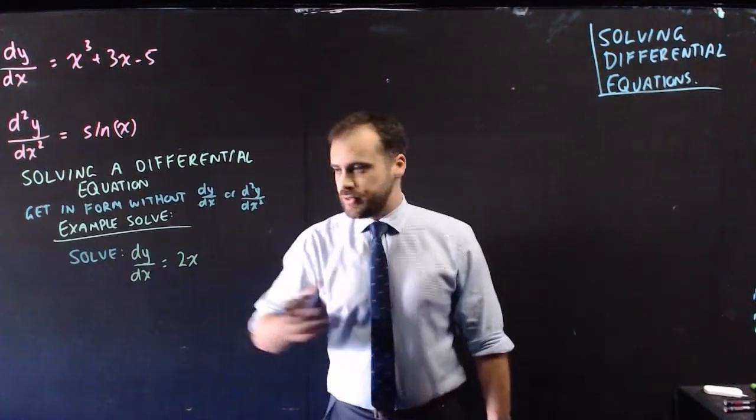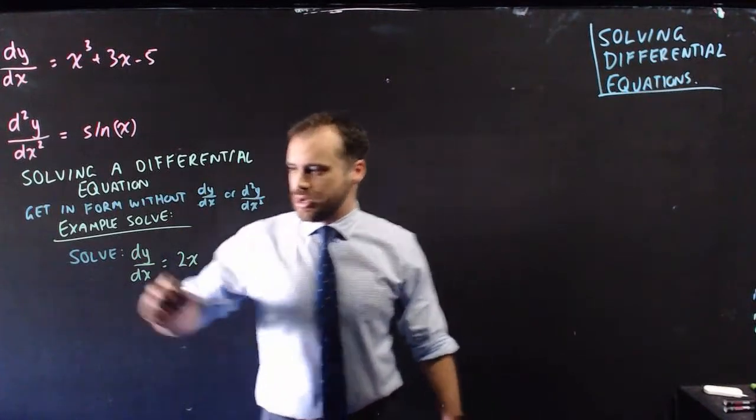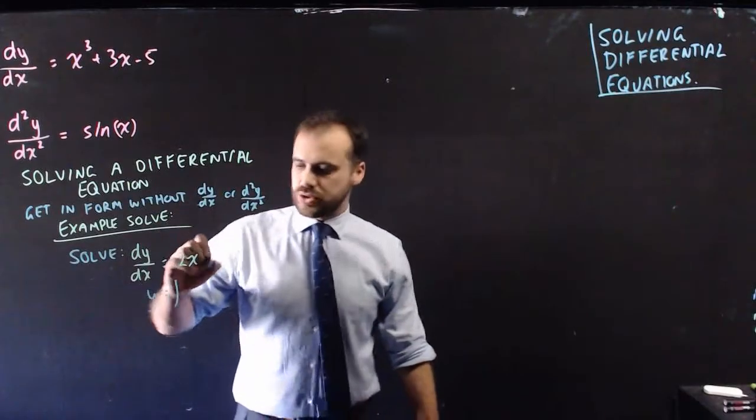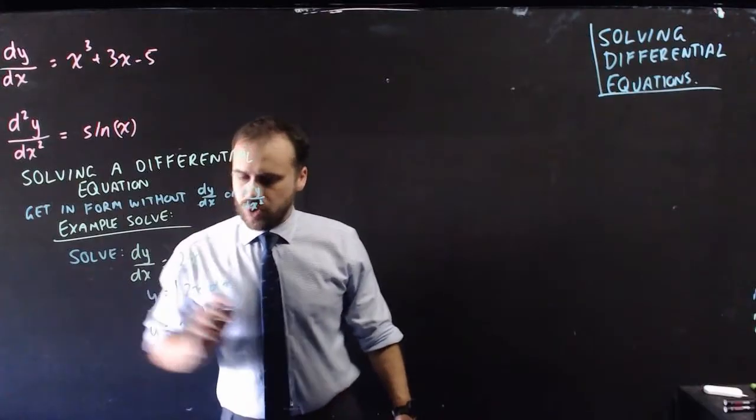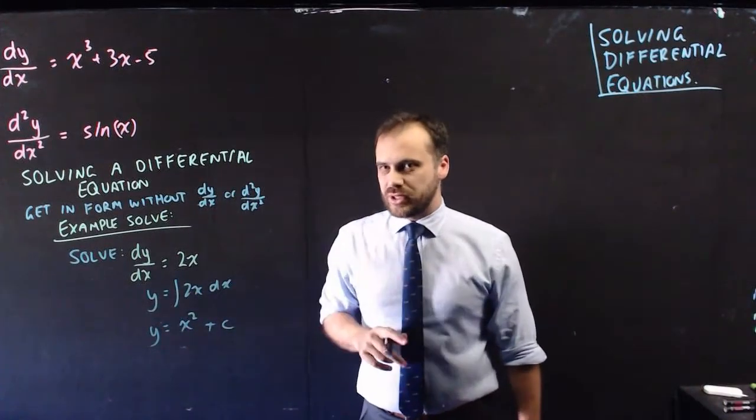A very fast example of this: if we were asked to solve dy/dx equals 2x, we would just take the integral, so y is going to be the integral of 2x with respect to x, which is going to be x squared. y equals x² plus c. We've solved it.